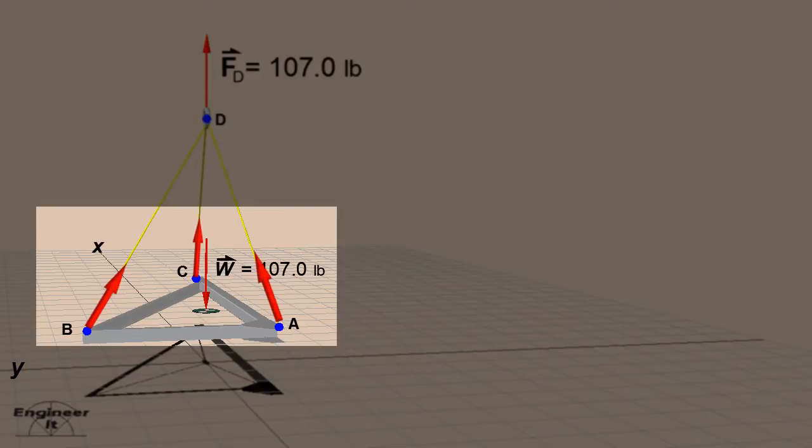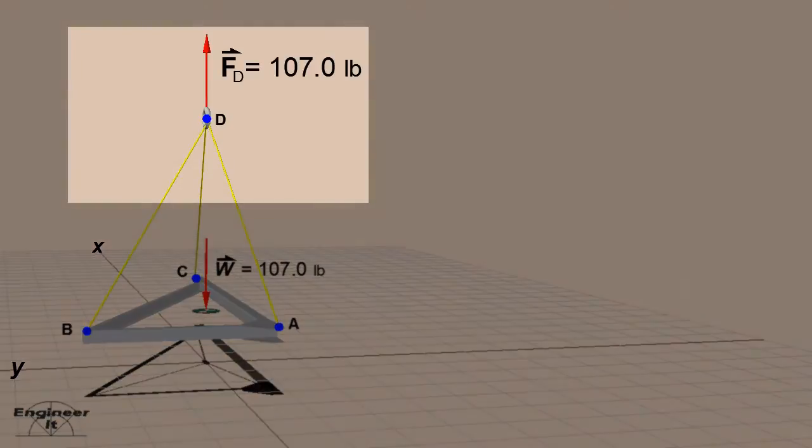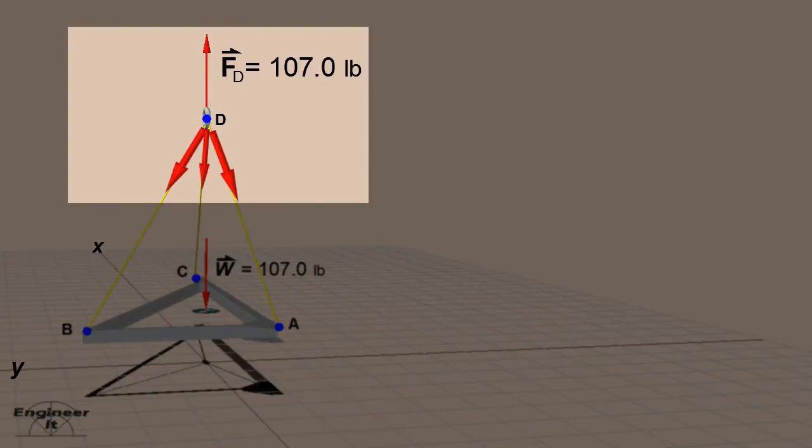Now look at the frame. The ropes tied at points A, B, and C are in tension. The forces are upward in the direction of the ropes. Look at the steel ring. The ropes tied at point D are still in tension. The forces are downward in the direction of the ropes.